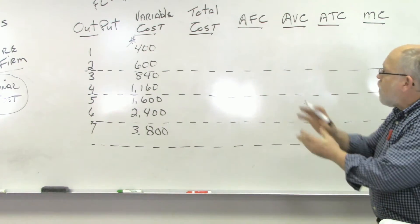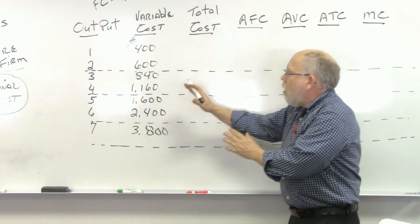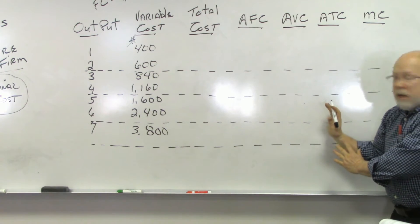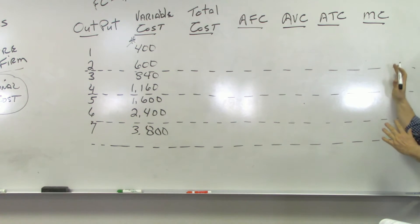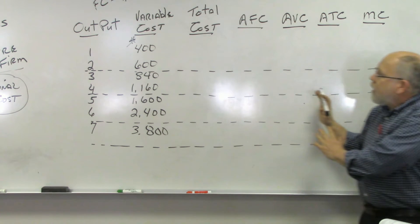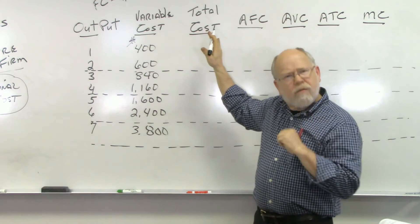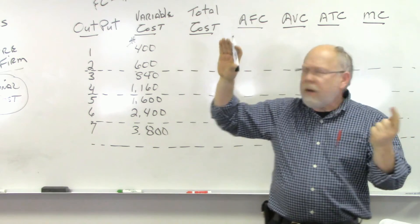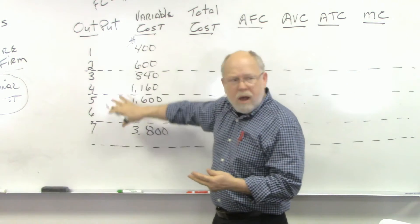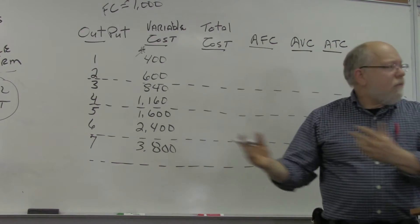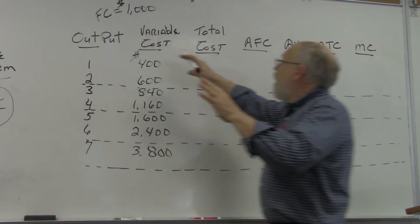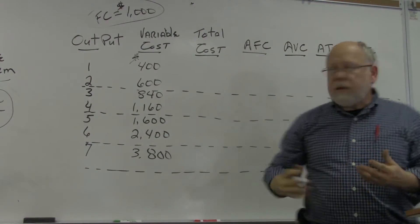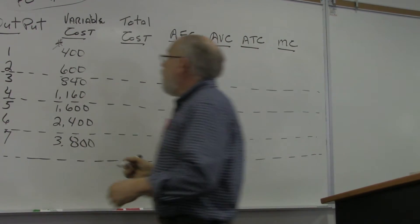We're going to fill this chart out all the way over to get to marginal cost. Let's begin. What was the formula for total cost? It was fixed cost plus variable cost — but we don't have a fixed cost column, and you might not have one on your test. So what do you do? You look around, find that somewhere in the question it says fixed cost is $1,000, and think outside the box — put a column in.